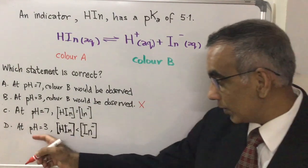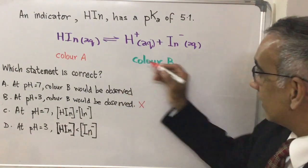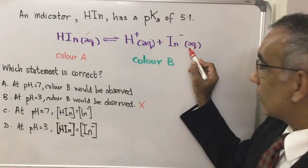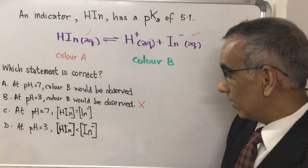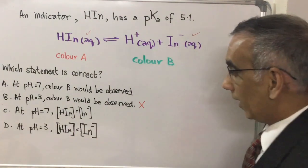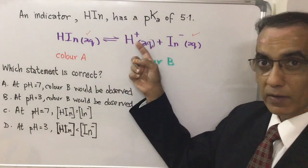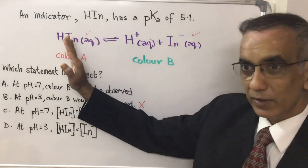Then you have at pH 3 the concentration of HIN, which is this, is less than the concentration of IN-. That too could be eliminated because if this is less than this and you have a pH of 3 which is a high concentration of H+, it immediately suggests that equilibrium would be shifted in this direction.